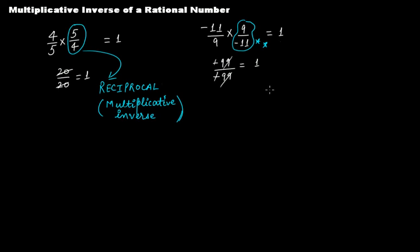So any number multiplied with its reciprocal gives you 1. This is true for whole numbers also, it is true for integers also, and it is true for rational numbers also.